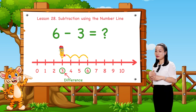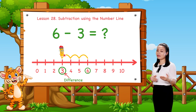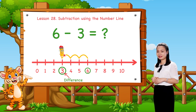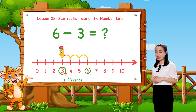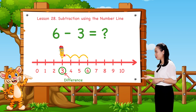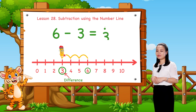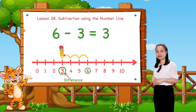Here, we land at number 3. Therefore, 6 minus 3 equals 3. It's easy, right?